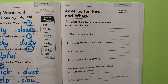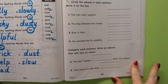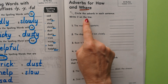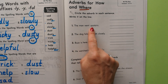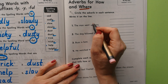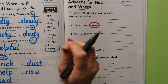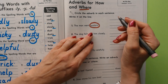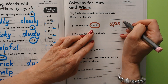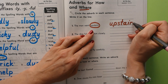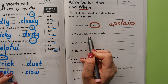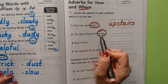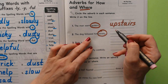Let's practice on page 201. Circle the adverb in each sentence and write it on the line. 'The man went upstairs' — upstairs. We just used that in our example sentence. Let's write it on the line — upstairs tells where he went. Next: 'the dog followed him closely' — closely is telling how he followed him, describing the verb followed.